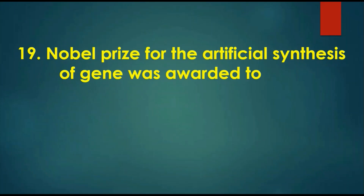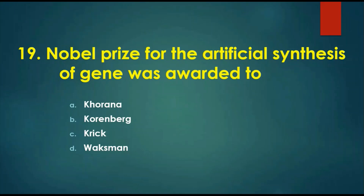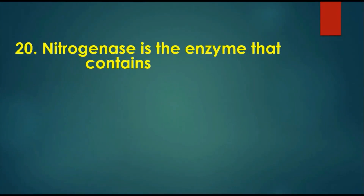Question 19: Nobel Prize for artificial synthesis of a gene was awarded to — options are: A) Khorana, B) Kornberg, C) Crick, D) Waksman. The answer is Khorana. Har Gobind Khorana in 1972 was the first one who proposed the artificial synthesis of the gene in yeast tRNA by a technique called solid-phase phosphodiester synthesis method.